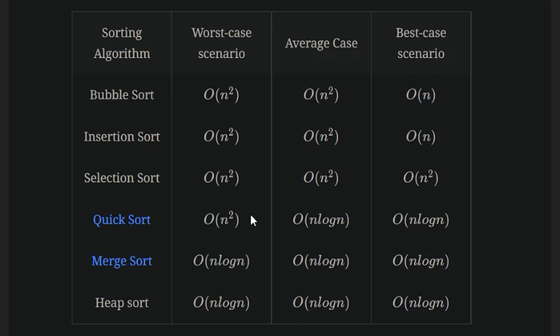The other interesting thing is that for the worst case scenario for quick sort, it's actually going to be O(n²). Depending on how the pivots are selected, you could actually get a runtime of n squared. One other thing to mention is that for the average case, it's actually impossible for a sorting algorithm to get faster than n log n — there's an entire proof dedicated to that. The main takeaway is that it's impossible for an unsorted list to get sorted faster than n log n.